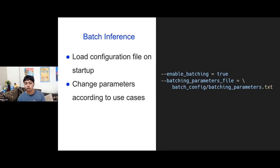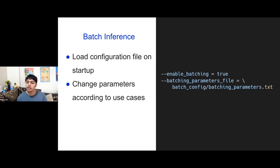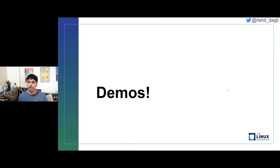You can also configure TensorFlow Serving with parameters to pull a model from a GCP bucket, S3 bucket, or wherever your models are stored. You could check for a new version in your bucket every 10 seconds, for example, and deploy the new version of the model very easily. Since model versioning is well-supported and consistent, this is also particularly easy to customize with these parameters.